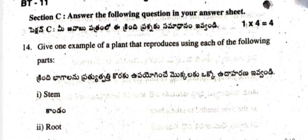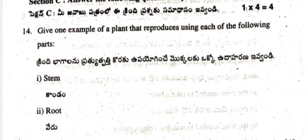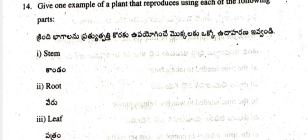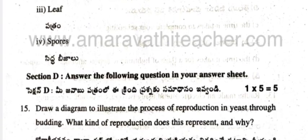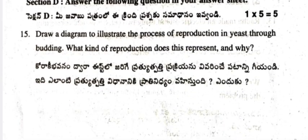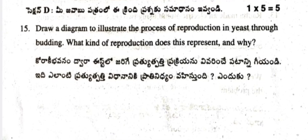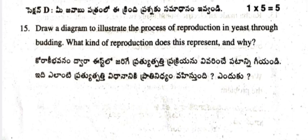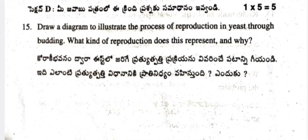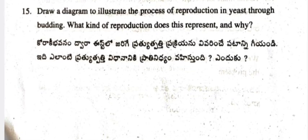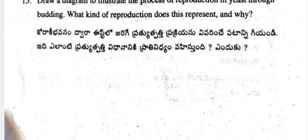Section C (1 × 4 = 4 marks): Give one example of a plant that reproduces using each of the following parts — stem, root, leaf, spores. Section D (1 × 5 = 5 marks): Draw a diagram to illustrate the process of reproduction in yeast through budding. What kind of reproduction does this represent and why? Do not skip the video — the solutions and answer key are given next.